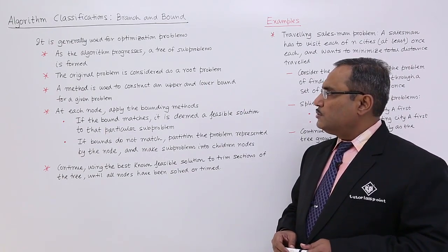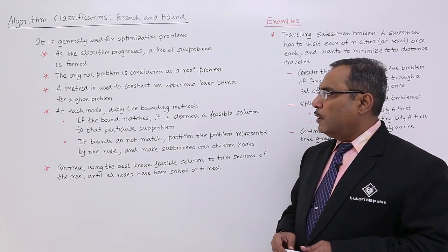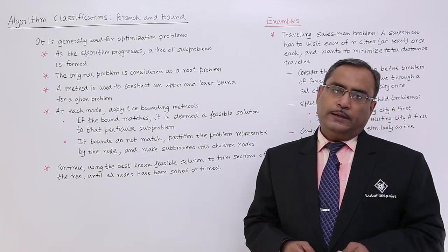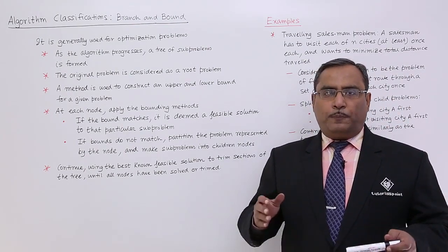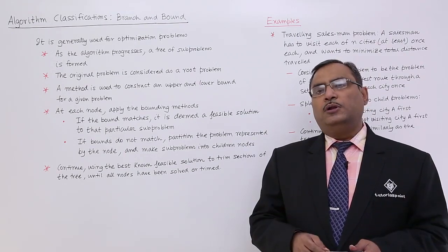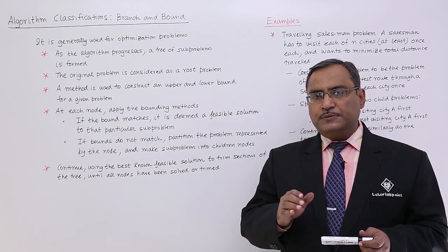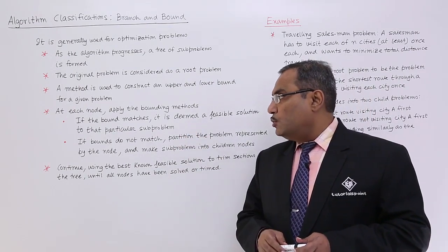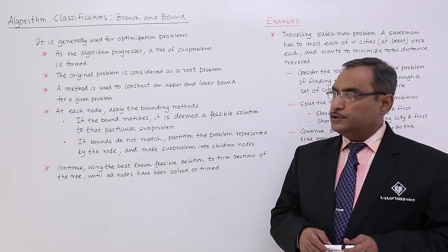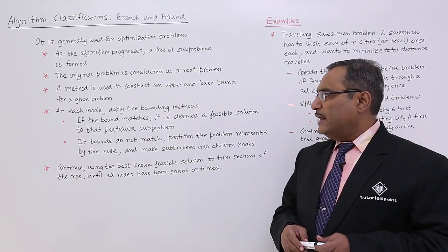The method is used to construct an upper bound and lower bound for a given problem. That means the tree will not be constructed for all possible children, for all possible possibilities. It will have some upper bound and lower bound. At each node, apply the bounding methods.